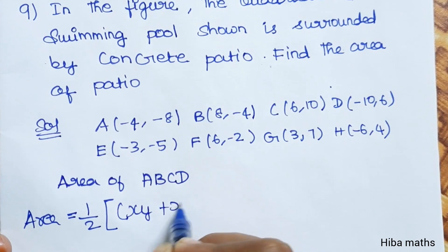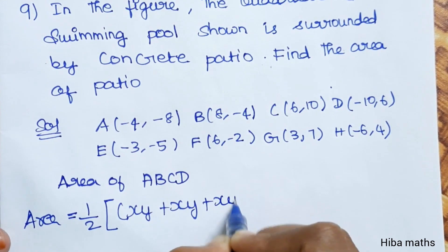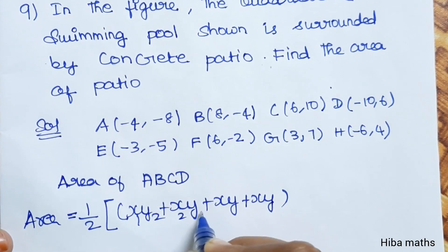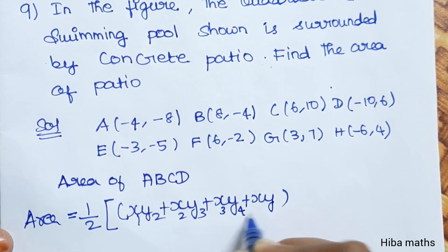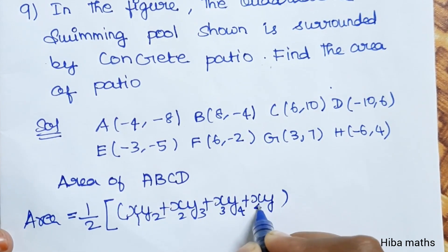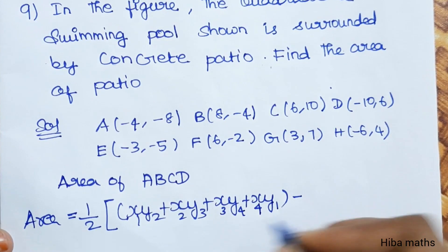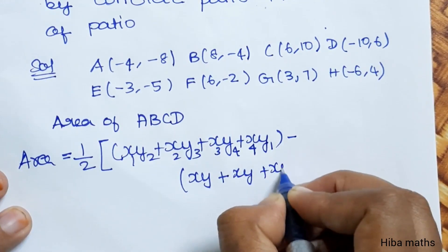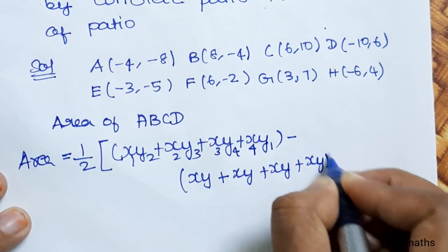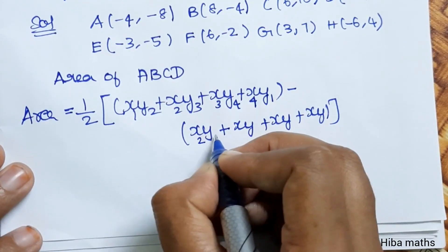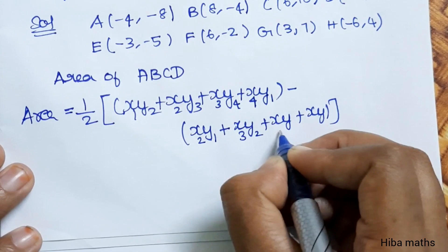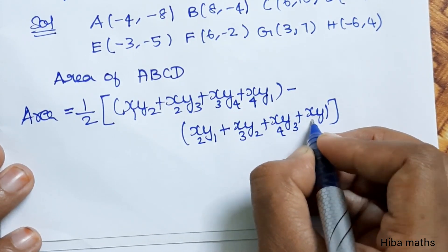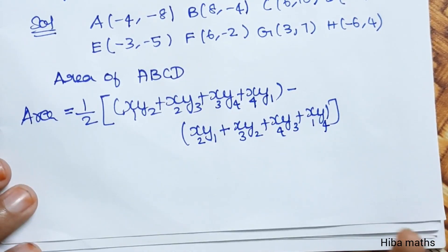The shoelace formula is: 1/2 × |( x₁y₂ + x₂y₃ + x₃y₄ + x₄y₁ ) − ( x₂y₁ + x₃y₂ + x₄y₃ + x₁y₄ )|, applied to points A, B, C, D and then E, F, G, H.